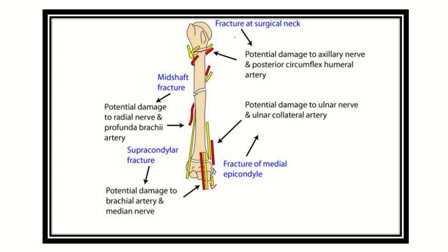To recap: surgical neck of the humerus — axillary nerve; mid-shaft of the humerus — radial nerve; supracondylar fracture — median nerve; medial epicondylar area — ulnar nerve. So the radial nerve, ulnar nerve, median nerve, and axillary nerve can each be damaged depending on the fracture location.